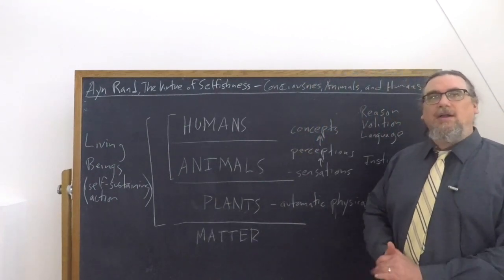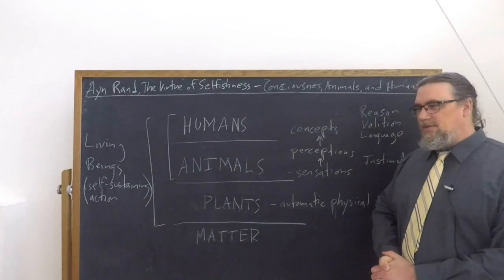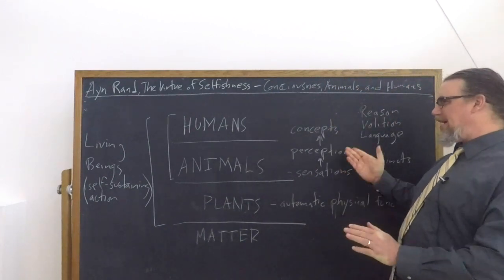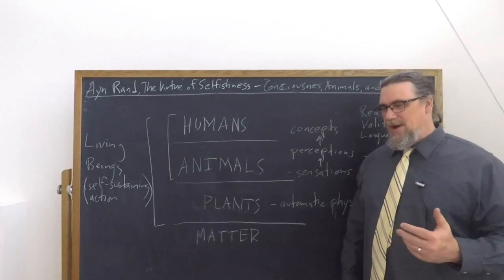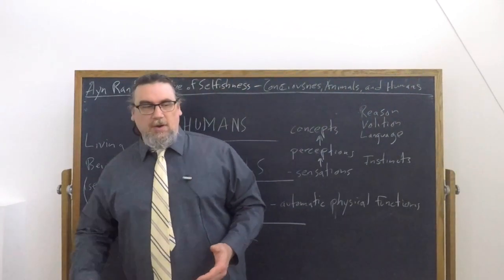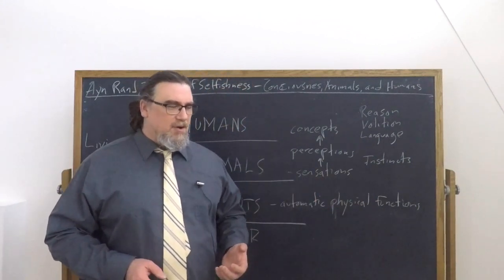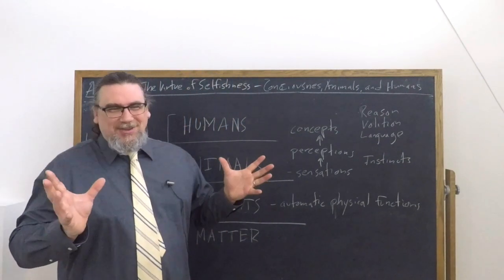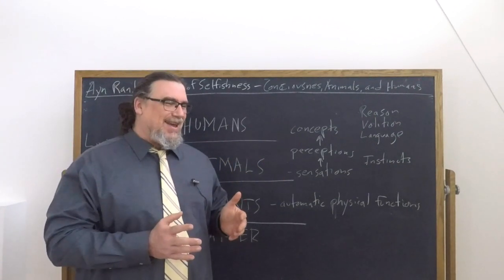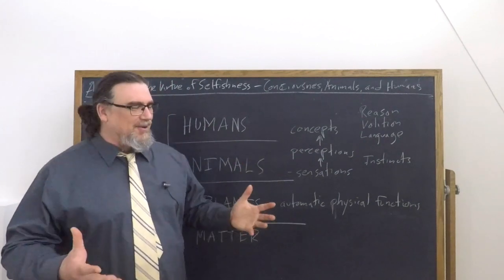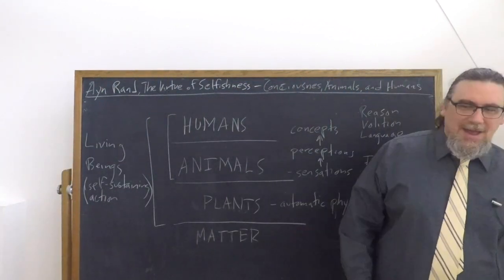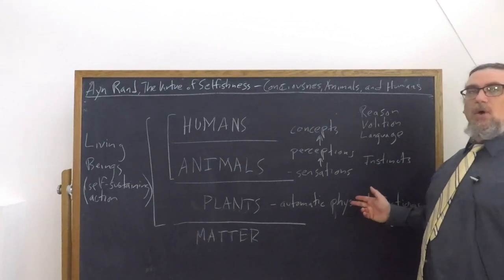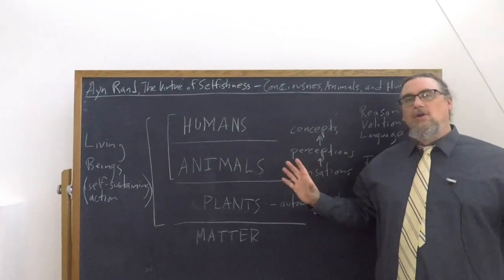But it does engage in some. It does respond to its environment. And insofar as they are mobile at all, they're making what we can call choices by a kind of analogy. So she says that the range of actions required for the survival of higher organisms is wider. It's proportionate to the range, and here comes a key idea, of their consciousness. So here is where she talks about sensations, perceptions, and concepts. Sensations are the lowest form of consciousness. All of these are involved in consciousness. Not all organisms go beyond mere sensations. But then there's perceptions, and then there's concepts. So let's see what she has to say about these. She says, the lower of the conscious species possess only the faculty of sensation, which is sufficient to direct their action and provide for their needs.